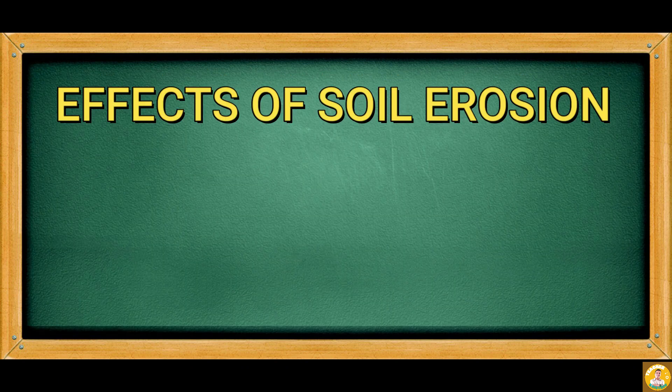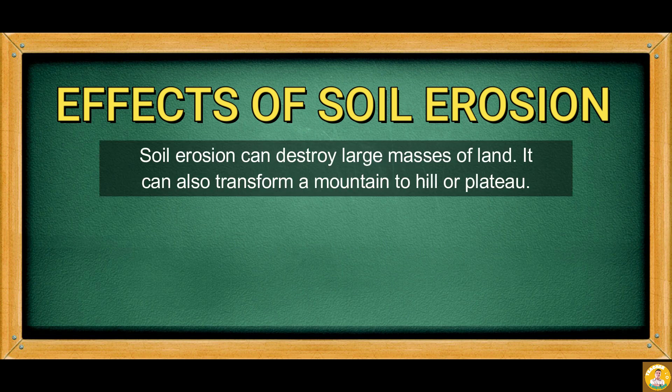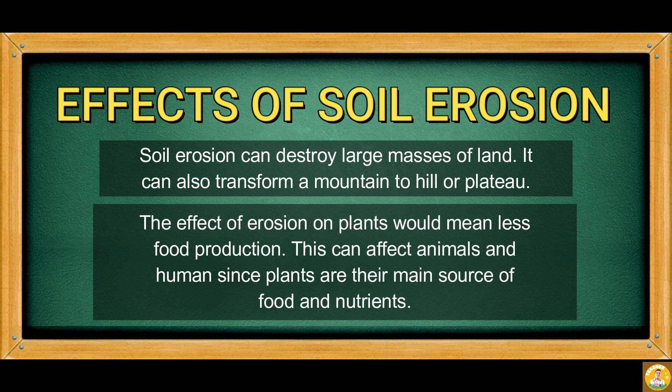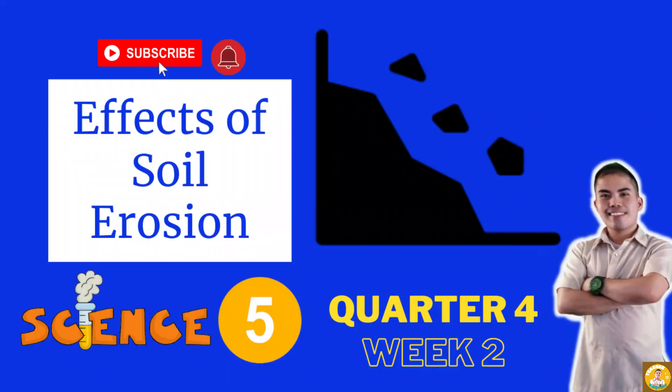To recap, here are the effects of soil erosion: soil erosion can destroy large masses of land and transform a mountain into a hill or plateau. The effect of erosion on plants means less food production, which can affect animals and humans since plants are their main source of food and nutrients. That ends our lesson for today — I hope you learned something from the discussion.